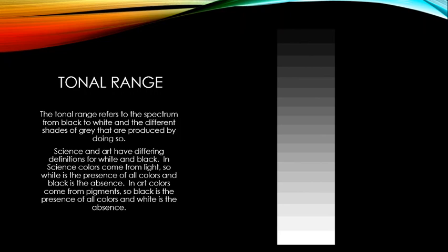We also have what's called a tonal range — the spectrum from black to white and the grays in between. Science and art have differing definitions: in science, white is the presence of all colors and black is the absence; in art, since colors come from pigments, black is the presence of all colors and white is the absence. Either way, both perspectives are valid.